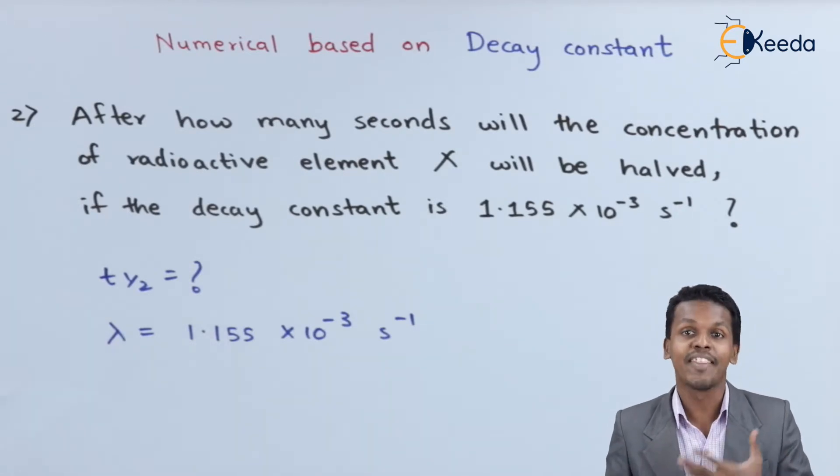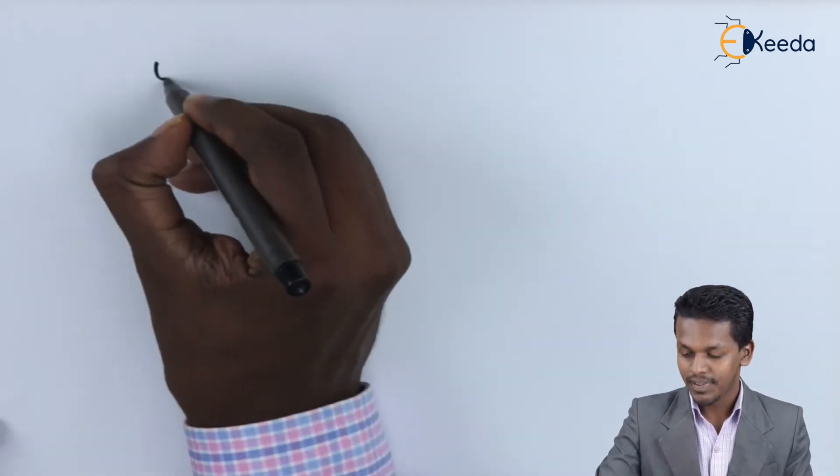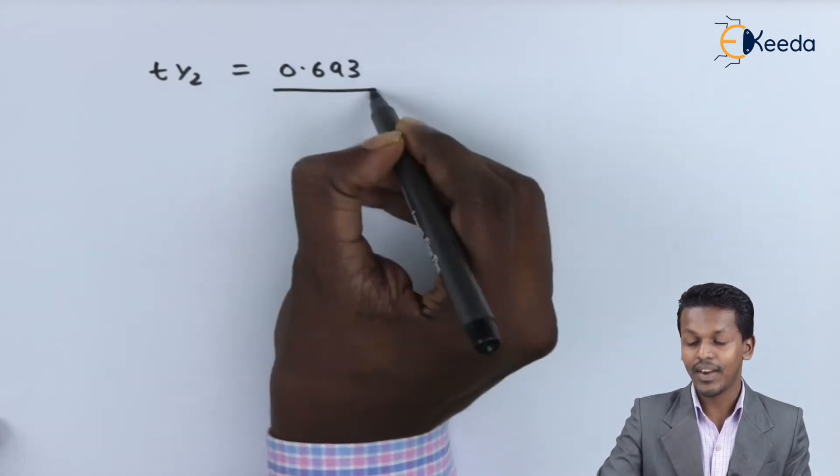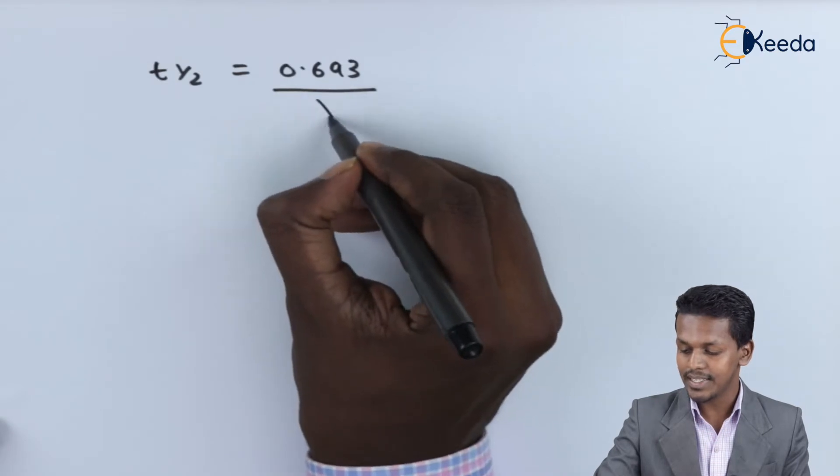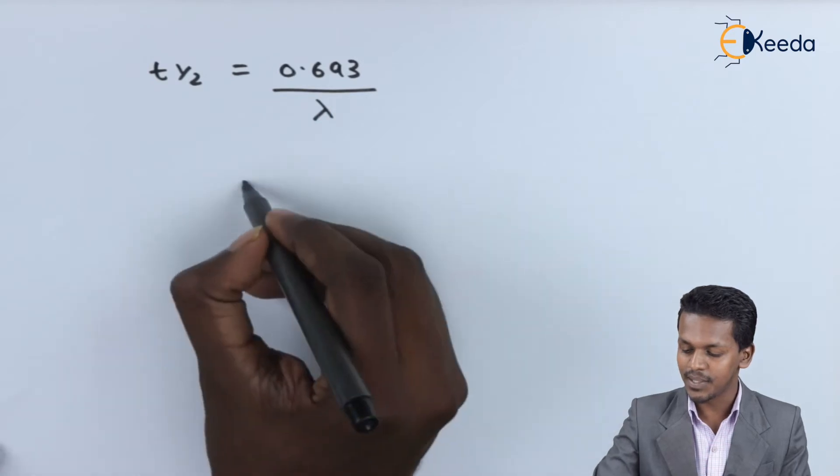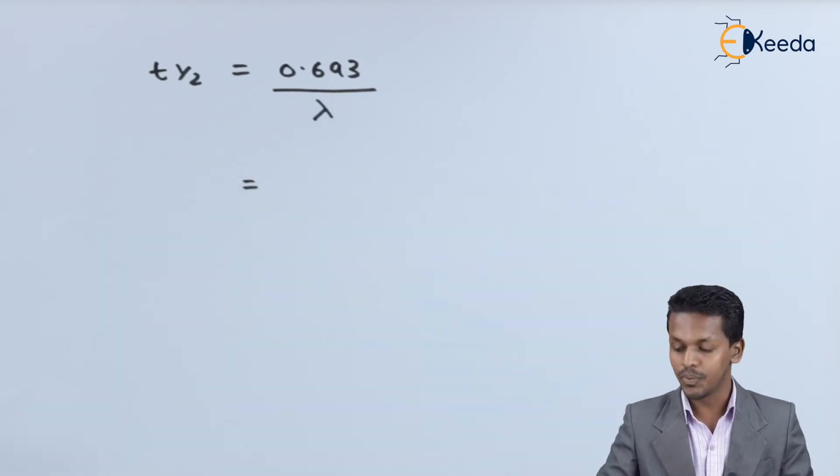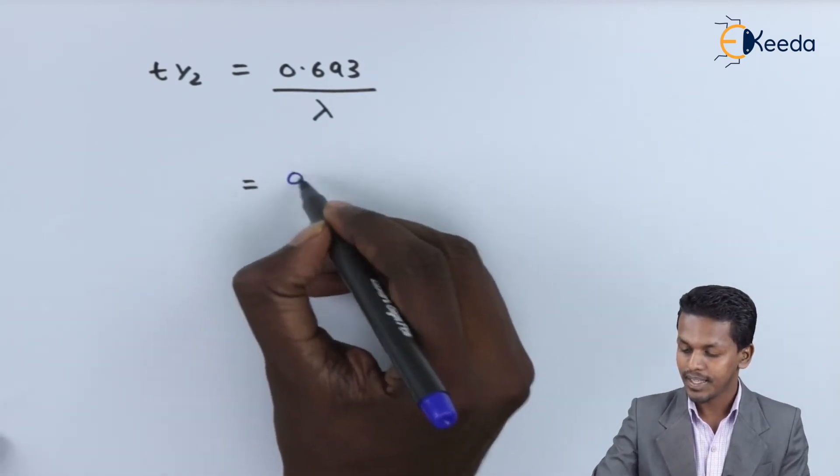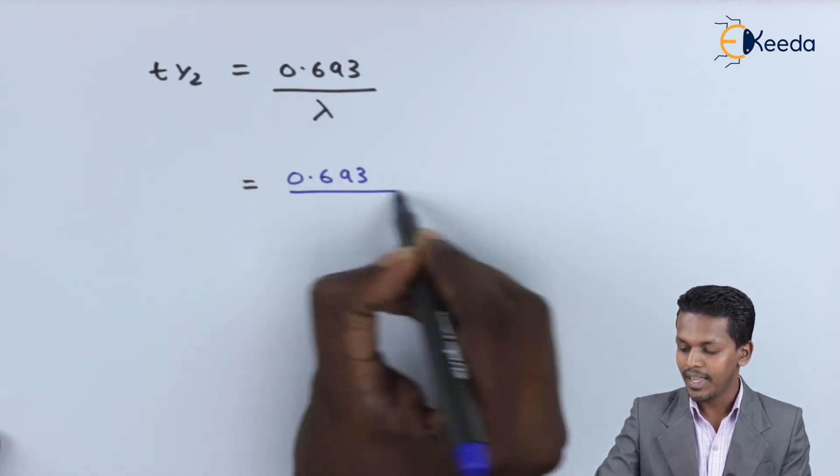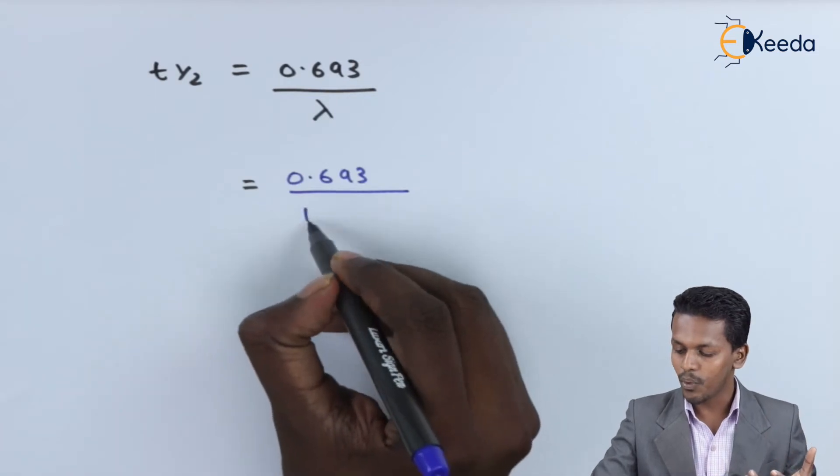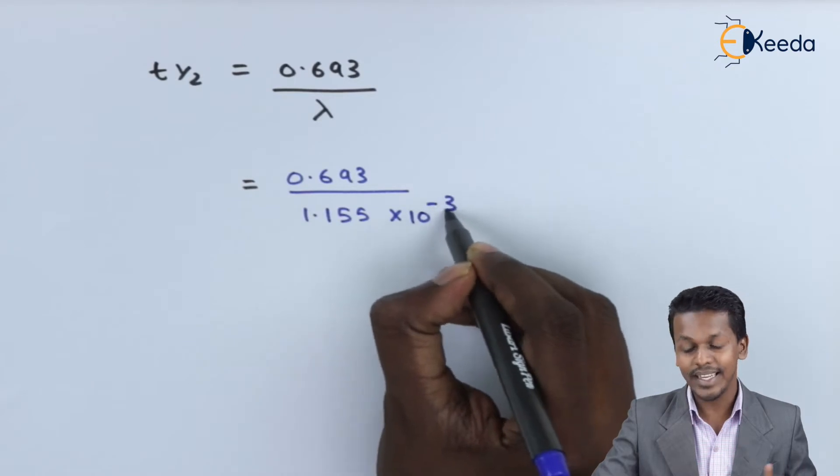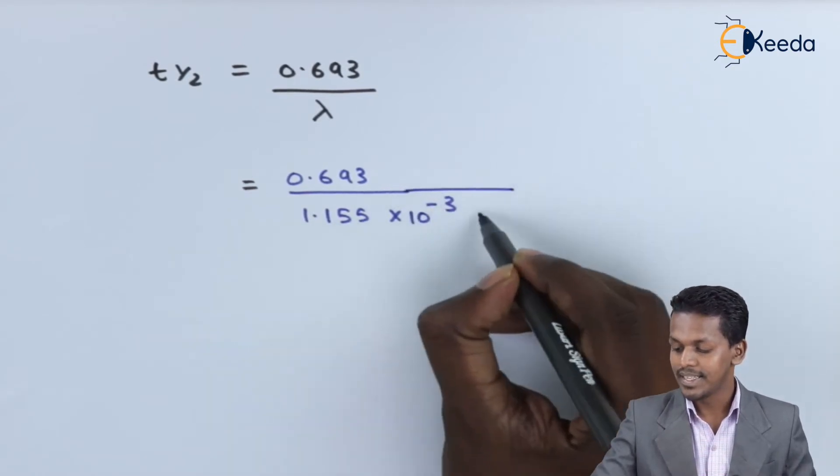For that we should know the formula: t_half equals 0.693 divided by the decay constant, lambda. We have to substitute the values. If we substitute the value for the decay constant, this is 0.693 divided by 1.155 × 10^-3 s^-1.